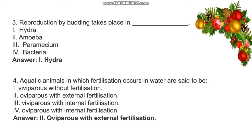Aquatic animals in which fertilization occurs in water are said to be: Viviparous without fertilization, Oviparous with external fertilization, Viviparous with internal fertilization, or Oviparous with internal fertilization. The answer is Oviparous with external fertilization.